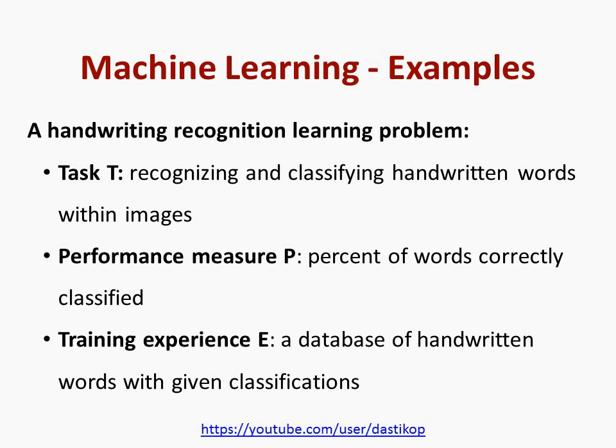The second example of machine learning that we consider is a handwriting recognition learning problem. Here the task T is recognizing and classifying handwritten words within images. The performance measure P is the percentage of words correctly classified. The training experience is a database of handwritten words with given classification.